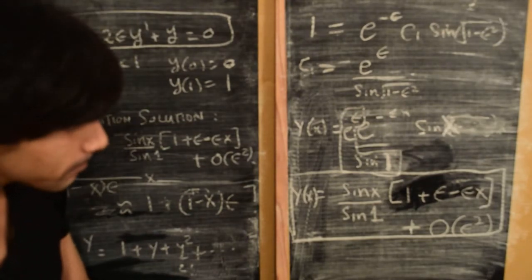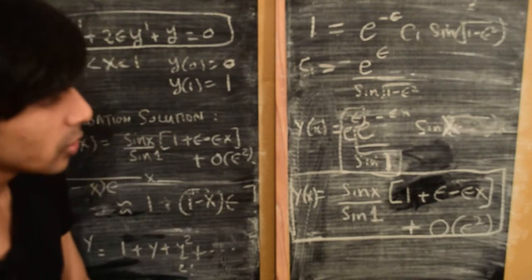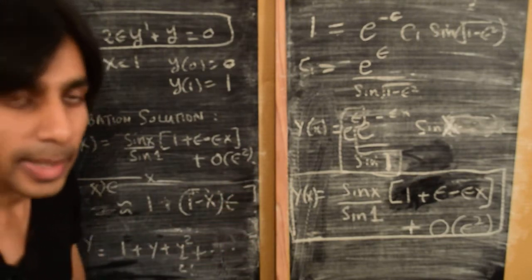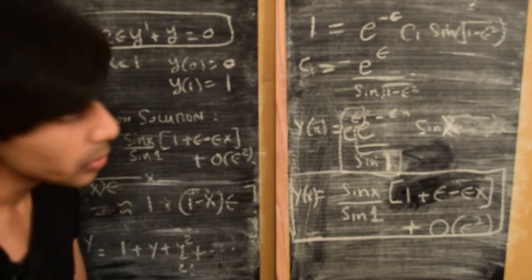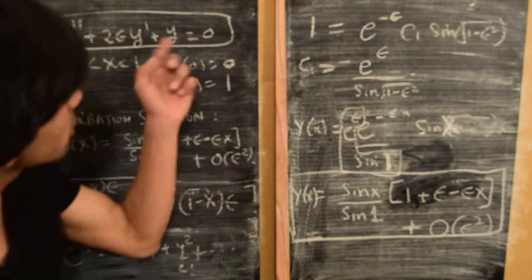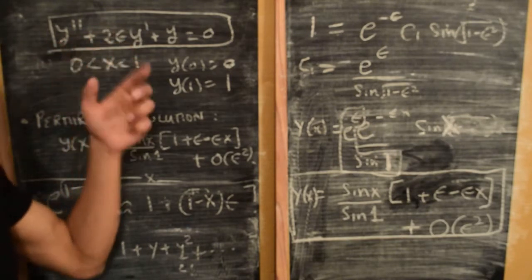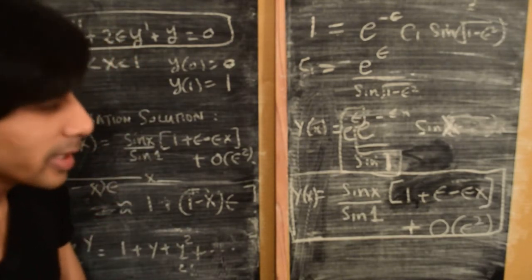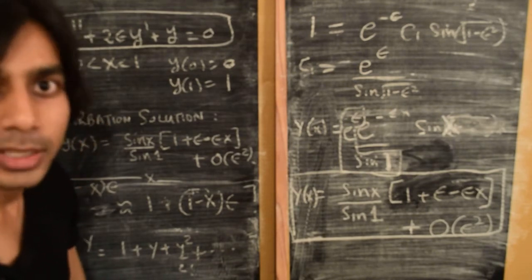This is the basic formalism for applying the regular perturbation method to ordinary differential equations. Next, we'll try to solve the version of this equation where epsilon multiplies the highest derivative term, which will lead us into some new territory. Thanks for watching.